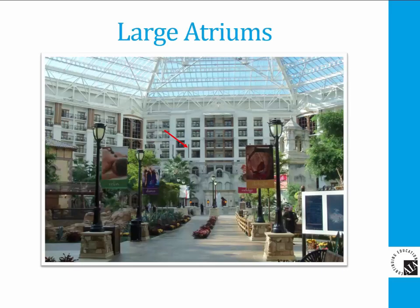This is a large 10-story high atrium. The goal here is to provide comfort for the occupants and proper temperature and humidity control for the foliage. Can you find the diffusers in this photo? They are in the vertical pillar near the red arrow.